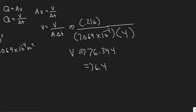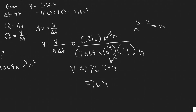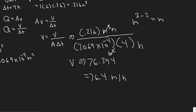Let's look at the units. We had meters cubed on top, meters squared in the denominator, and hours in the denominator. The meters cubed divided by meters squared just becomes meters, and then you have meters per hour. So the answer is 76.4 meters per hour.